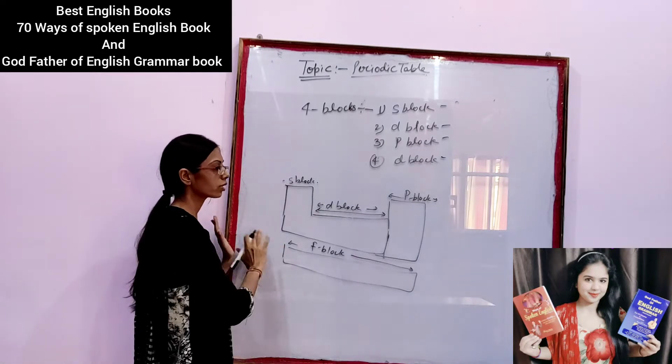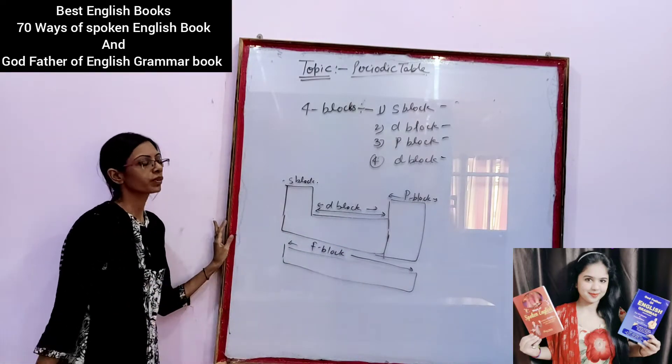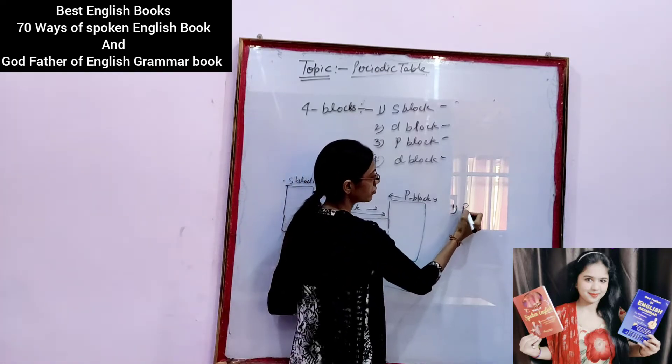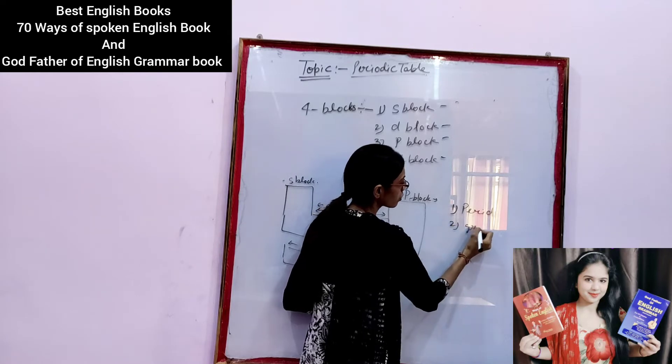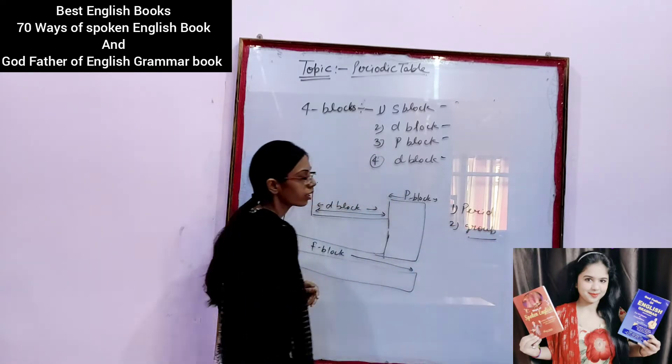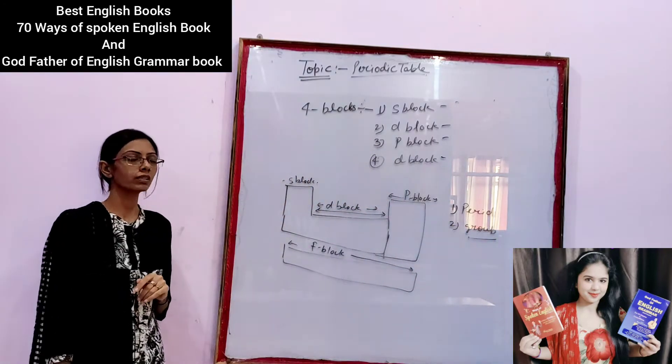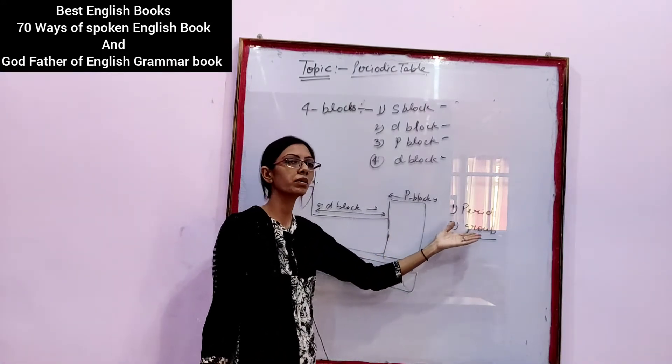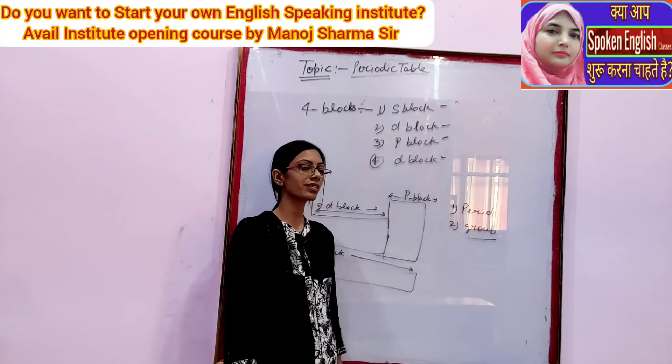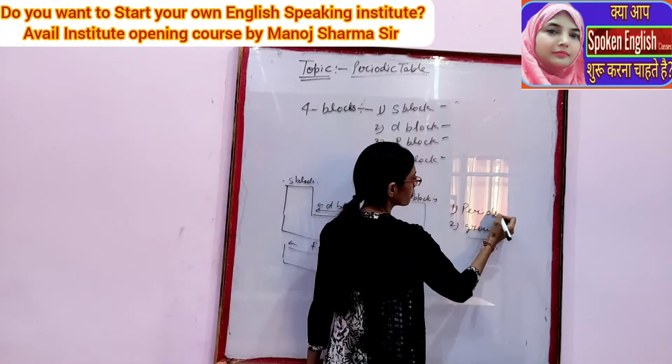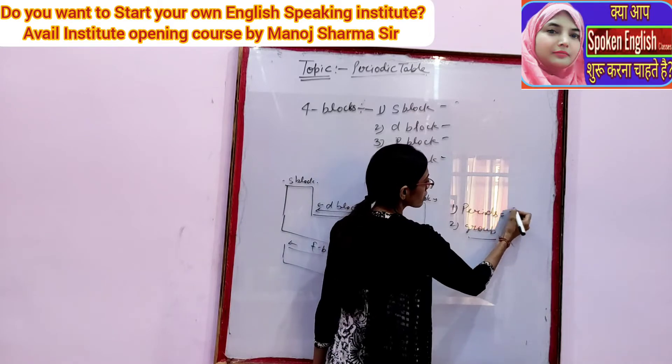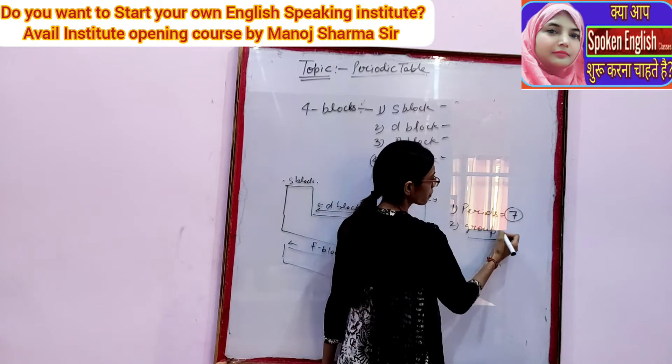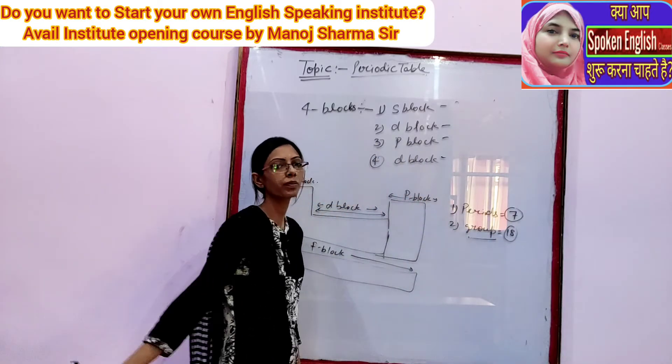Now, this is a very simple outline of the periodic table. The periodic table is completely divided into parts. First we call period and second is group. The question is how many groups are there, how many periods are there. So students, it is very easy for us. We have a total of 7 periods in a periodic table and a total of 18 groups in our periodic table.